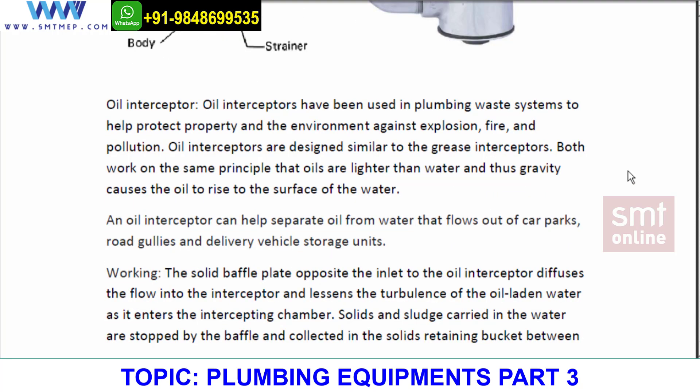The next type is an oil interceptor. Oil interceptors are generally found in service stations — for example, where vehicles are cleaned — and at petrol pumps or gas stations. When the area is cleaned, oil, petrol, or grease mixes with the water. Since these are combustible materials, we need to separate the oil and water to avoid any explosion or fire.